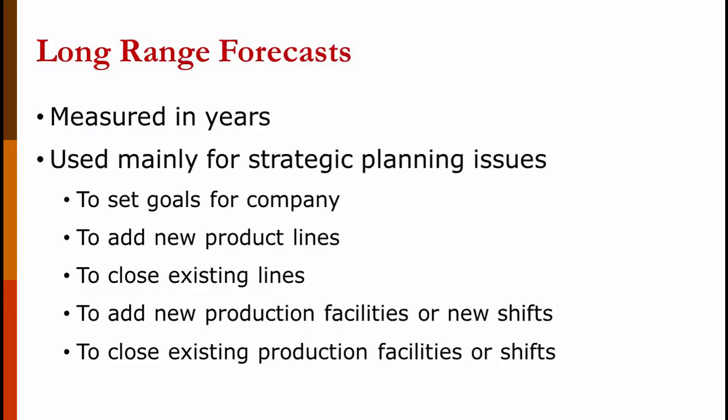Long range forecasts are measured in years. For a typical company that's one or two or three years, basically how far out into the future you need to go in order to add new capacity. However, at Georgia Power, our long range forecast went out 20 years. If you're Intel making chips, going out 20 years would make absolutely no sense at all.